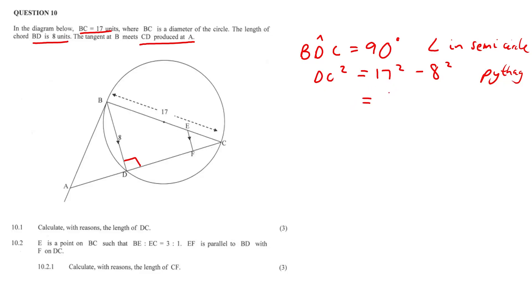17 squared minus 8 squared, you can just plug it into your calculator, it will give you 225. Therefore, DC is equal to 15. And that was question 10.1, sorted.